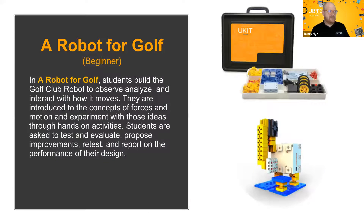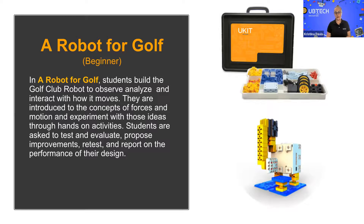I'm going to turn it over to Christina, who will walk us through some specific examples from our curriculum catalog. So we're going to start with the beginner kit. You can see an image of the beginner kit. We suggest grades three through five because we hit standards three through five — so this is for NGSS grades third through fifth grade. In Robot for Golf, you can see our golf club robot, which is a lot of fun. Students really use this for forces and motion. They get to evaluate, improve upon the design, and really see all of those science concepts in action.